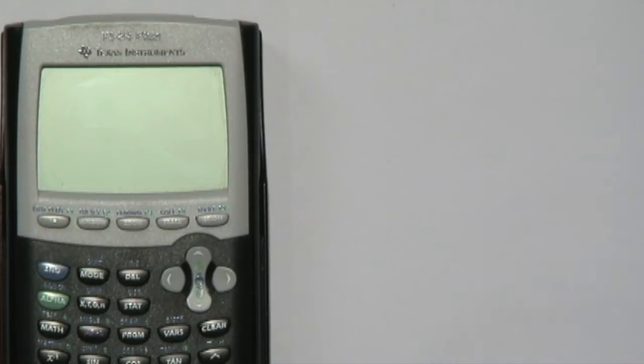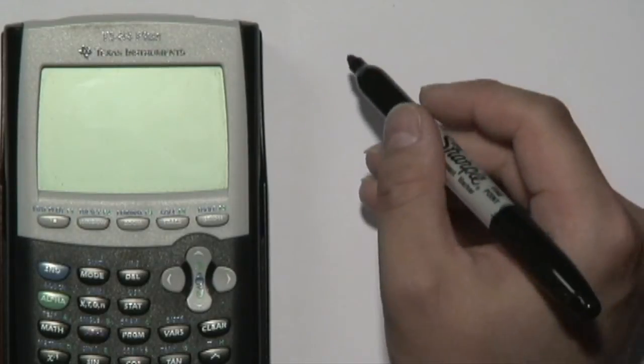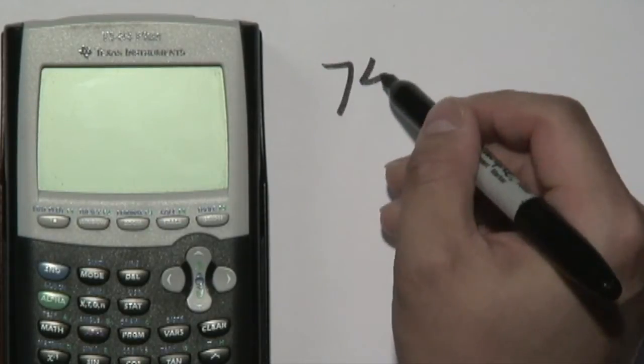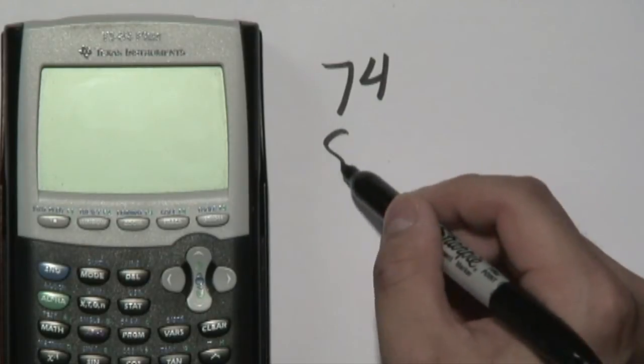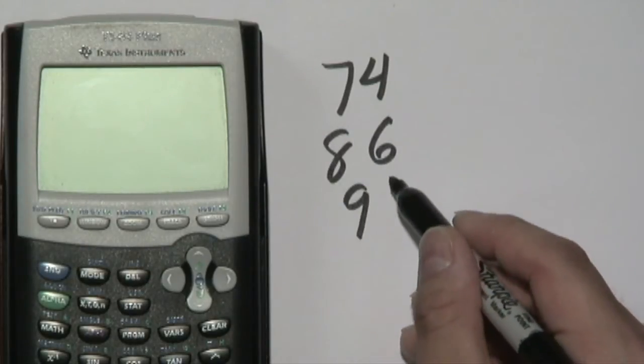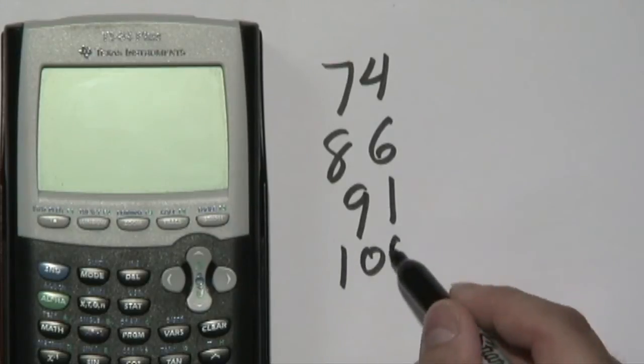Now let's just say you have test scores that are 74, 86, 91, and 100.